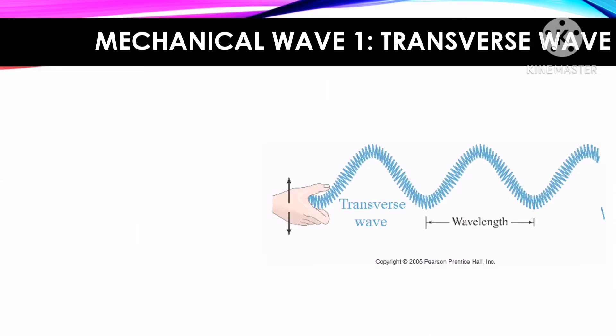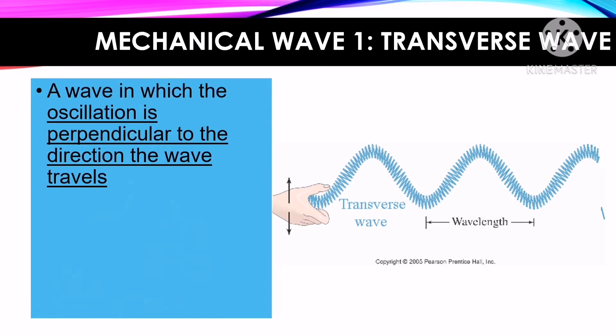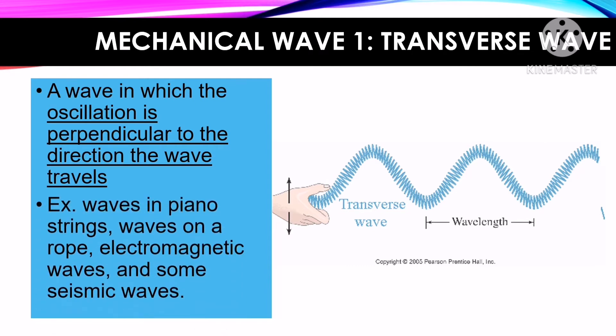Let us now discuss the first type of mechanical wave. What is a transverse wave? A transverse wave is a wave in which the oscillation is perpendicular to the direction the wave travels. Examples are waves in piano strings, waves on a rope, electromagnetic waves, and some seismic waves.